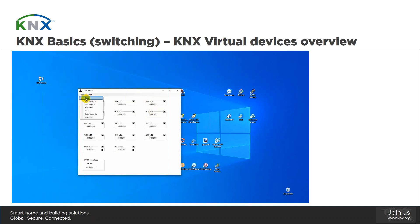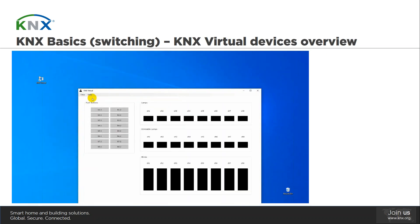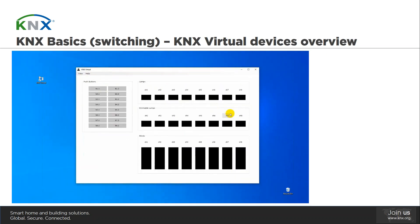In the Base view, we see the user interface of the following devices. The push button on the left side has eight channels, each of them having two rockers. Each rocker includes a red highlighting to indicate the status feedback. On the right side on top, we see the switching actuator, which also has eight channels, to which there are eight lamps connected. When a channel is black, it means the lamp is switched off; when it's orange, it means it's switched on.